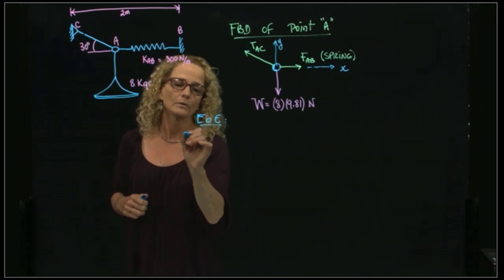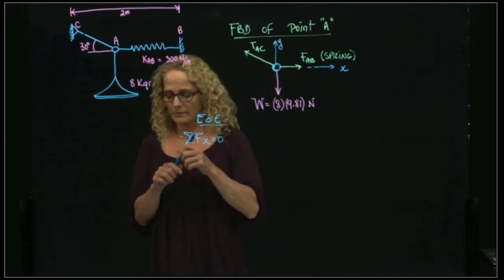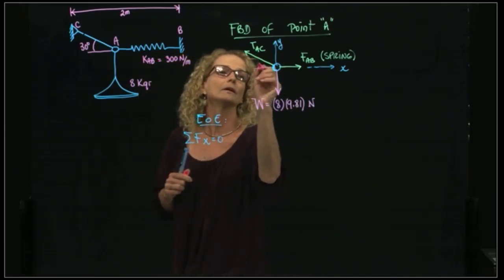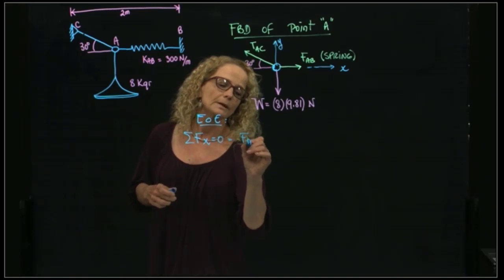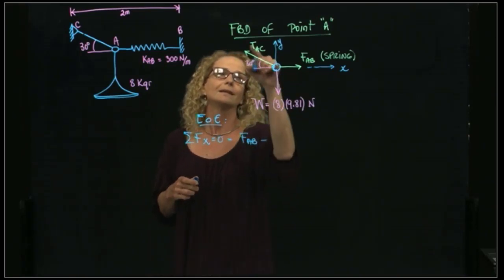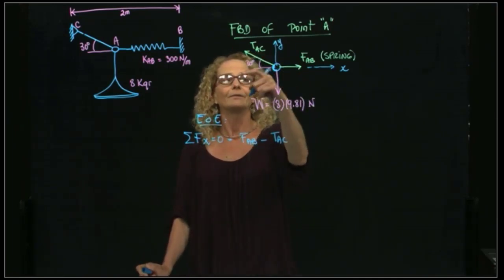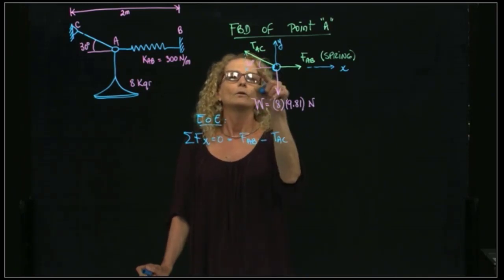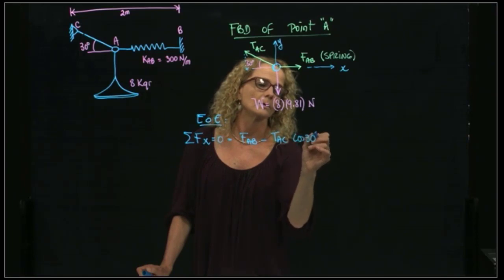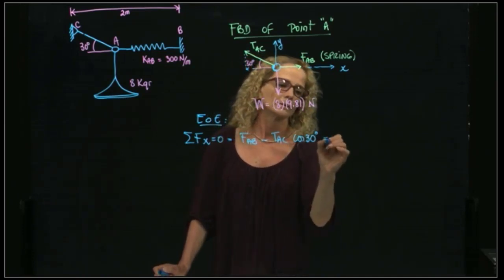So I will add forces in X, and they will be equal to zero because we are in equilibrium. What forces do we have in X? We have this angle over here, which is 30 degrees. Therefore, we have that the force of the spring minus the tension AC. And as you see, that tension is not in the X direction, but it has a component in the X direction, which will be the tension times the cosine because it's the adjacent, so cosine of 30. And the weight doesn't contribute to the X direction because it's only in the Y direction. This is equal to zero.